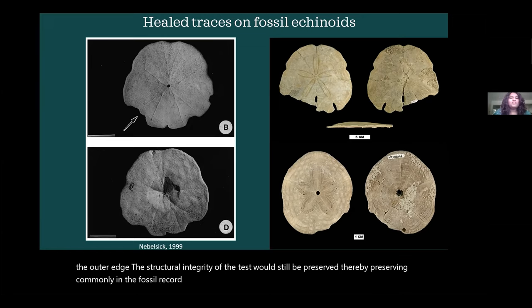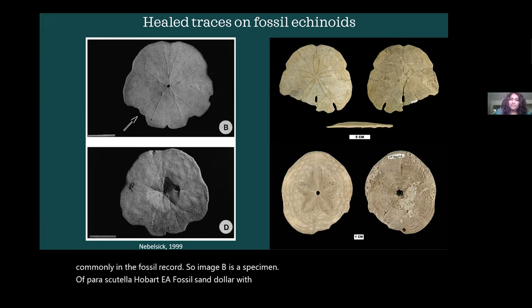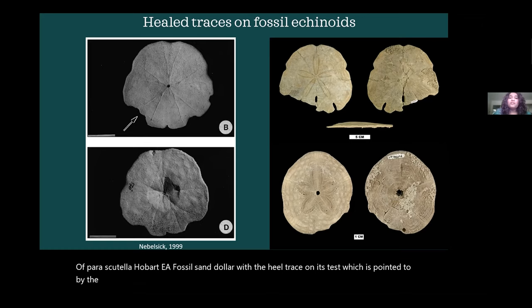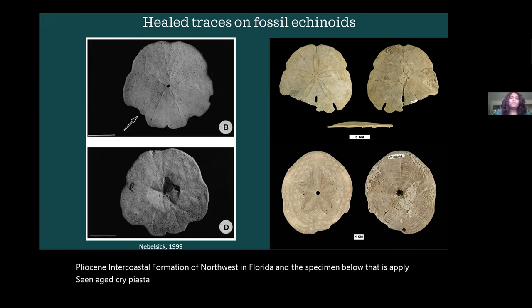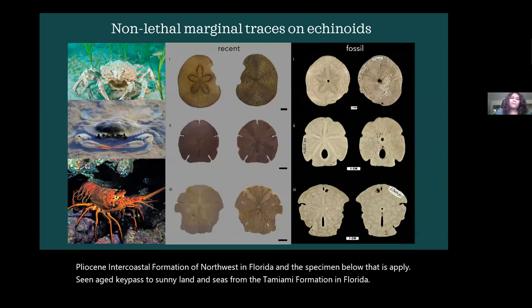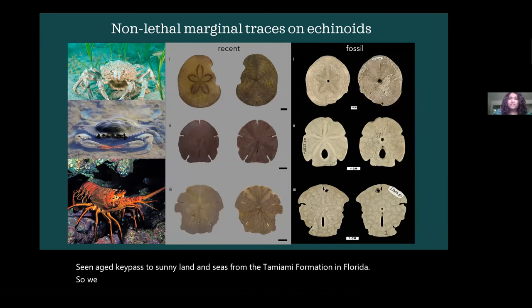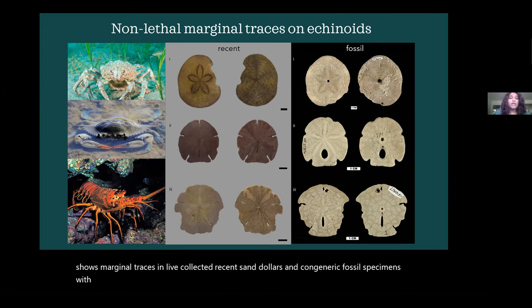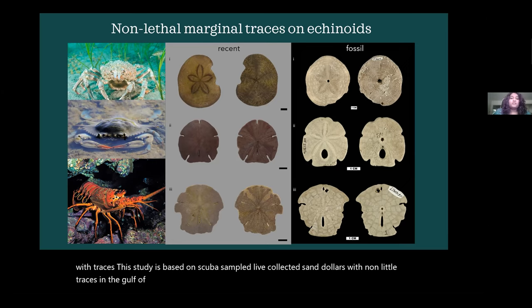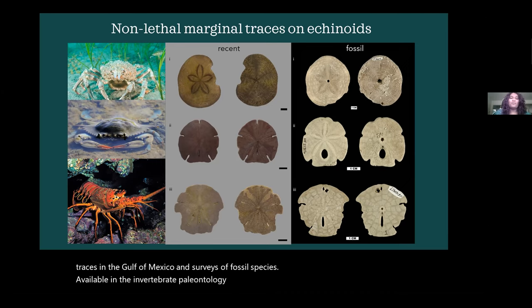Image B is a specimen of Parascutella hobartii, a fossil sand dollar with a healed trace on its test pointed to by the arrow. The specimen in the top right corner is Encope aberrans from the Pliocene Intracoastal Formation of northwestern Florida, and the specimen below is a Pliocene-aged Clypeaster sanlandensis from the Tamiami Formation in Florida. We anticipate that the characteristics of marginal traces on fossil echinoid specimens are not significantly different from those observed in recent echinoids, and this image shows marginal traces in live-collected recent sand dollars and congeneric fossil specimens.